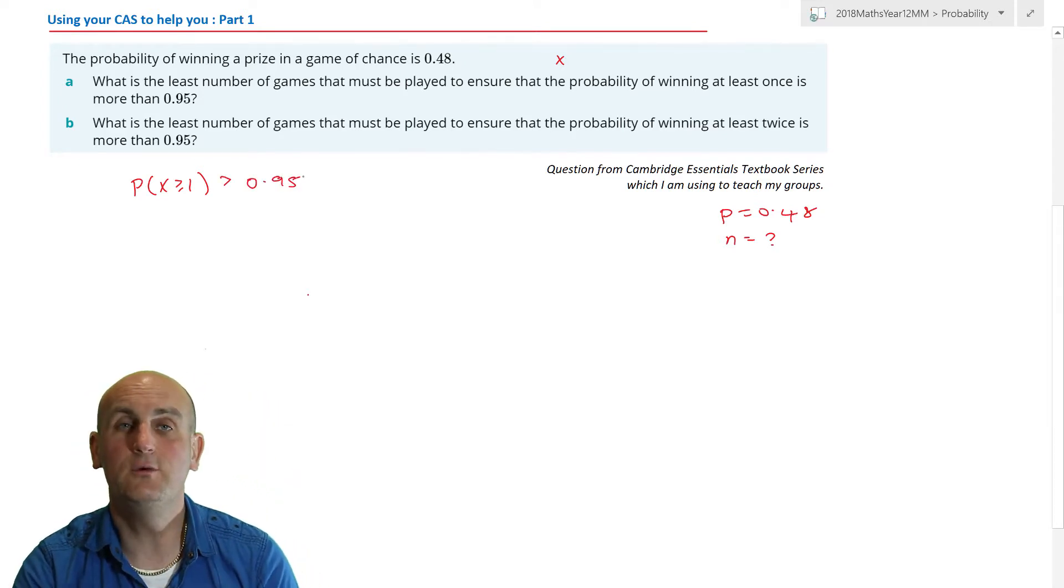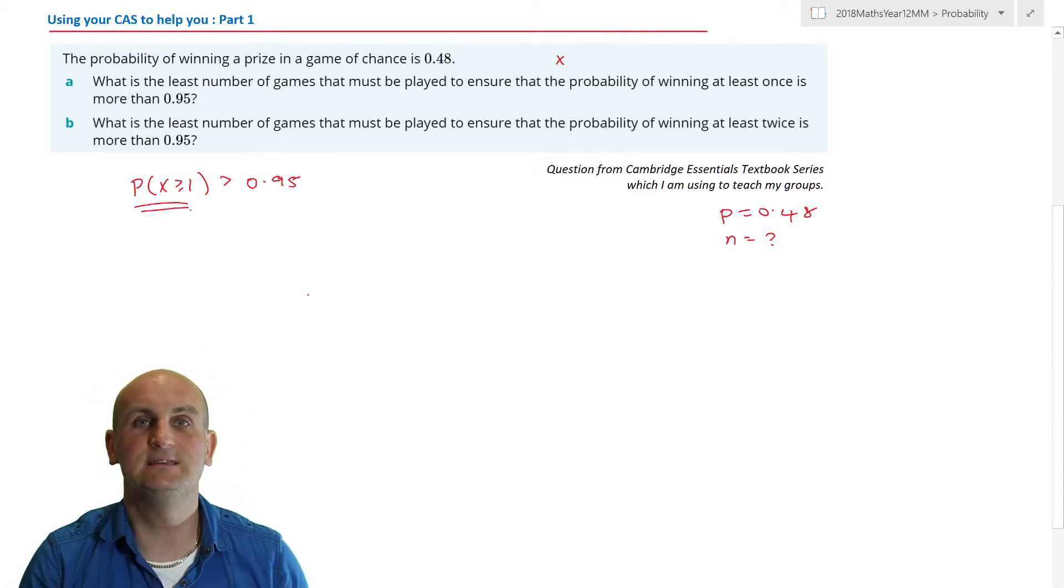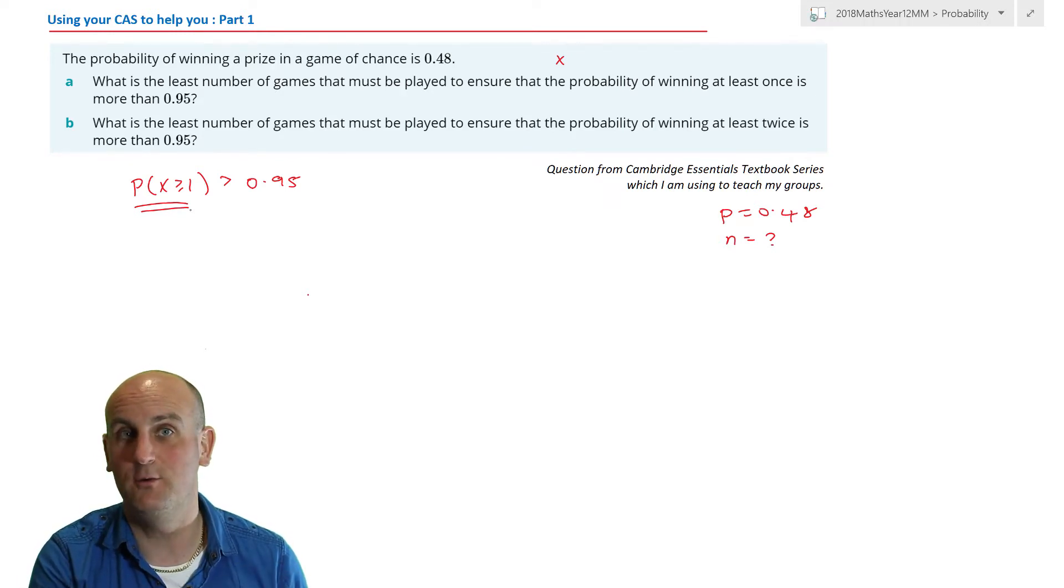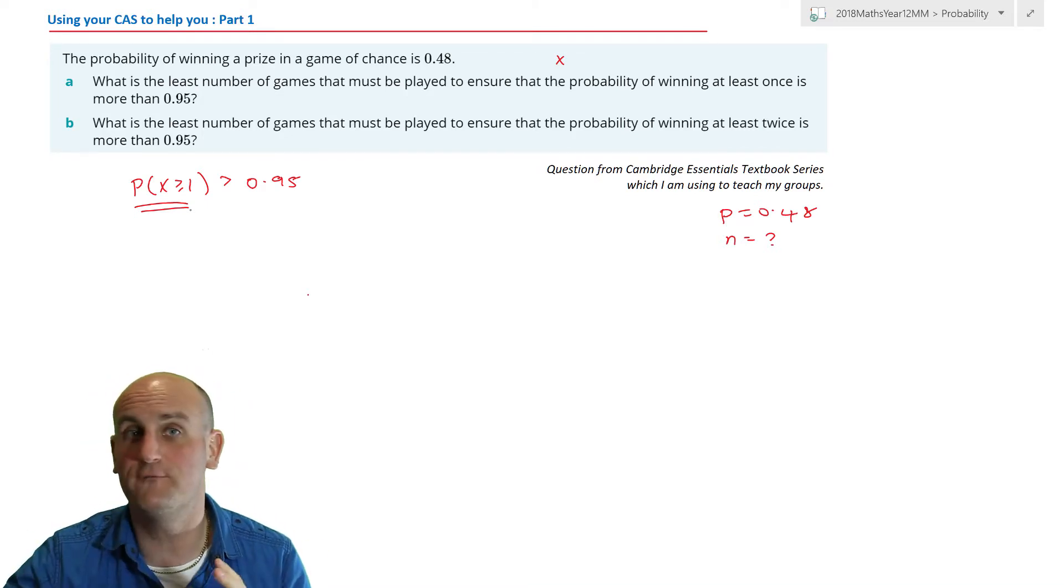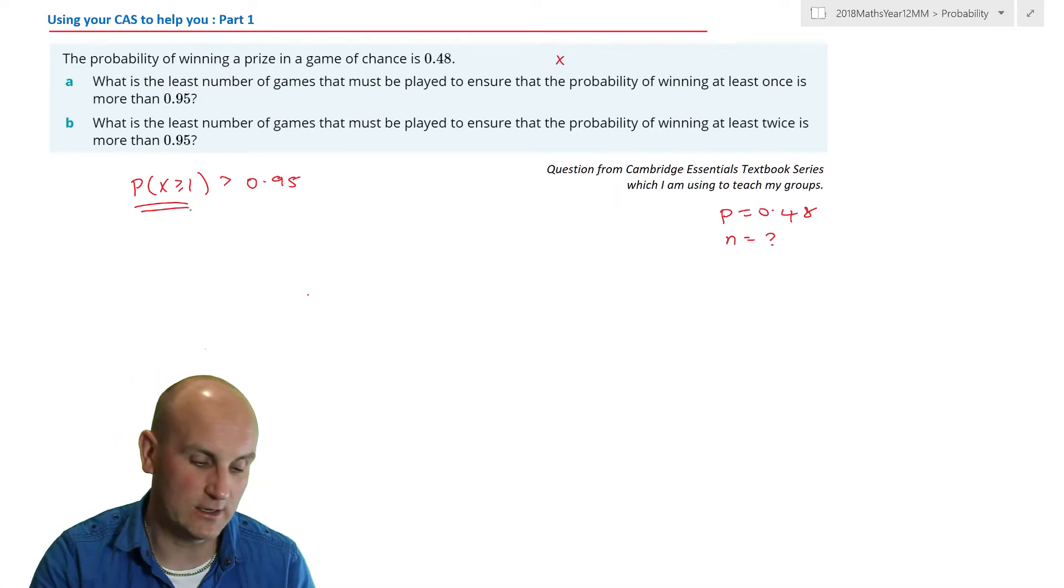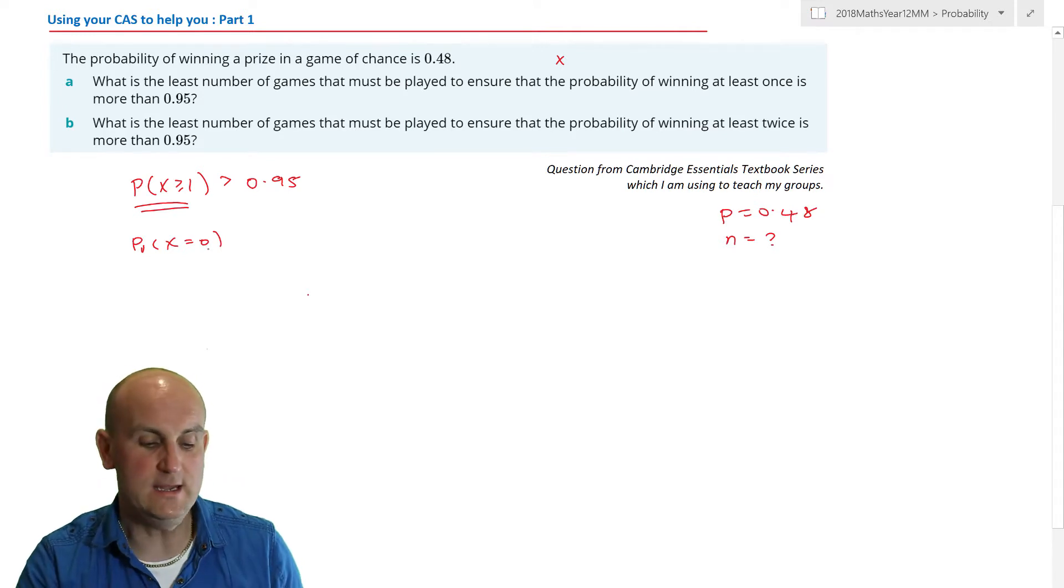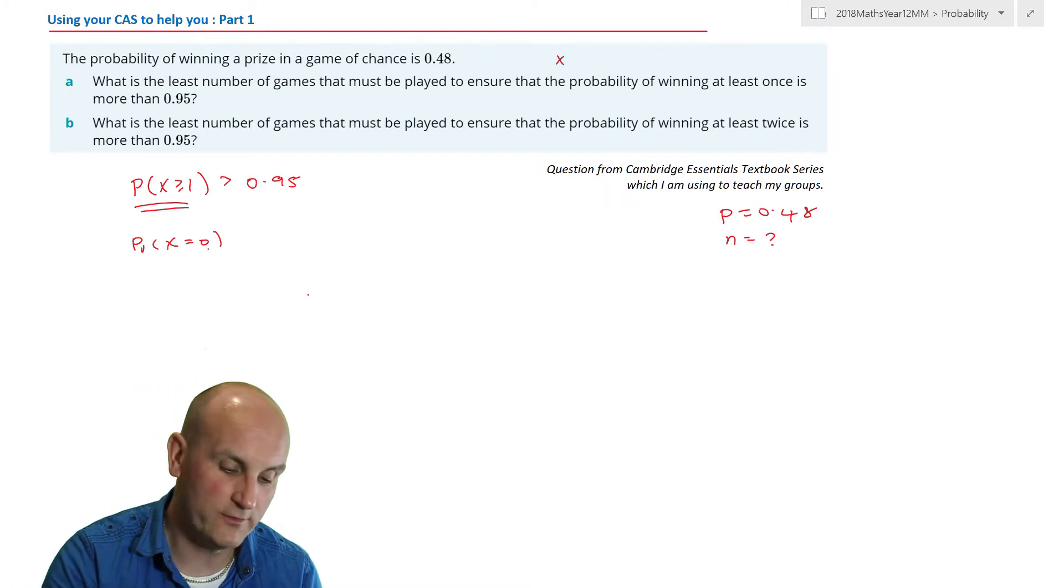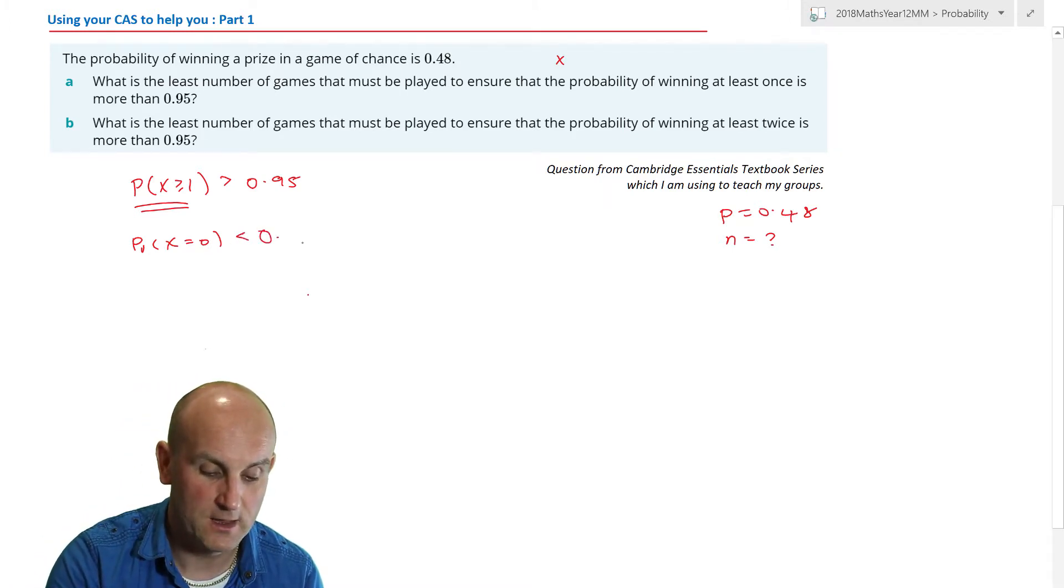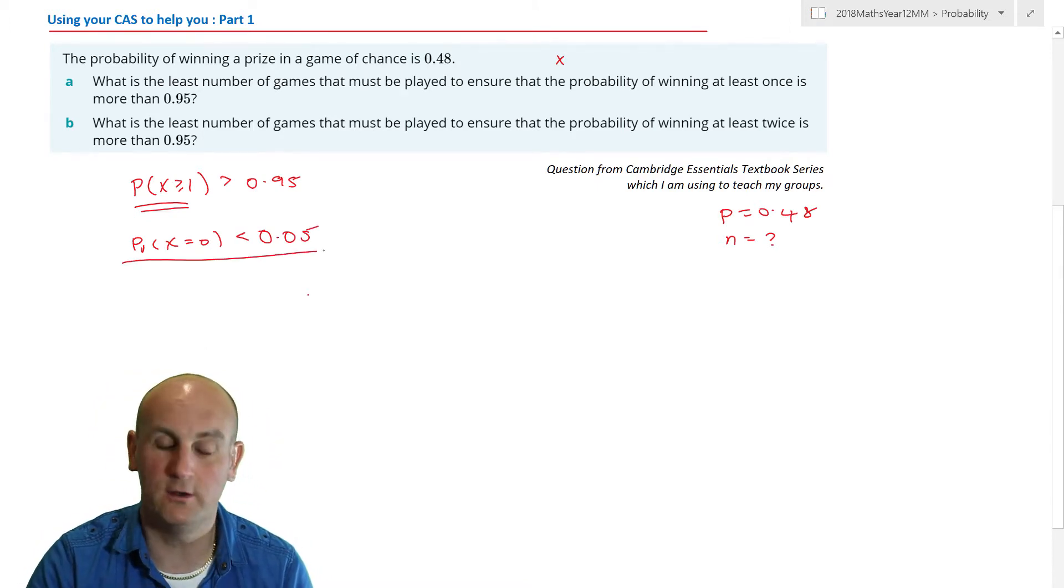Now if you've watched previous videos, you will know that whenever you see x is greater than or equal to 1, it's a trick. It basically says don't do that. Work out what x is 0 and take it away from 1. Why? Because 1, 2, 3, 4, 5, 6 goes on forever. The only value that doesn't actually get included in that would be the probability of x is equal to 0. Now if we know that we're looking for x is greater than or equal to 1 to be 0.95, then we know that x is equal to 0 must be less than 0.05. So this is what we're looking to work out.